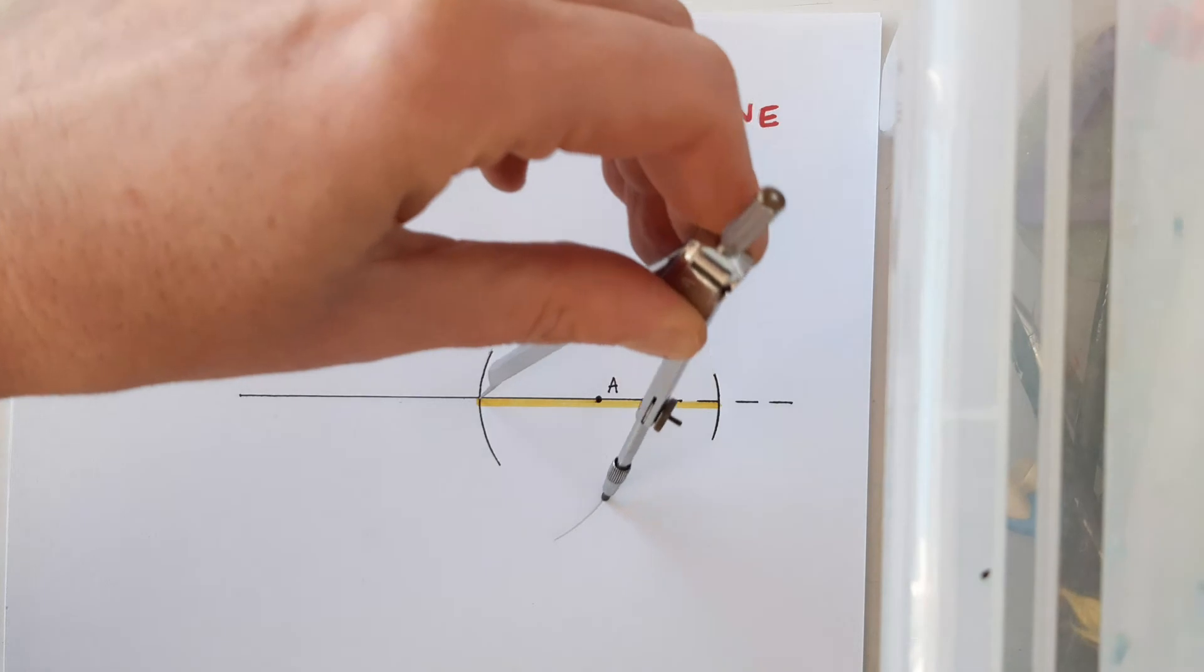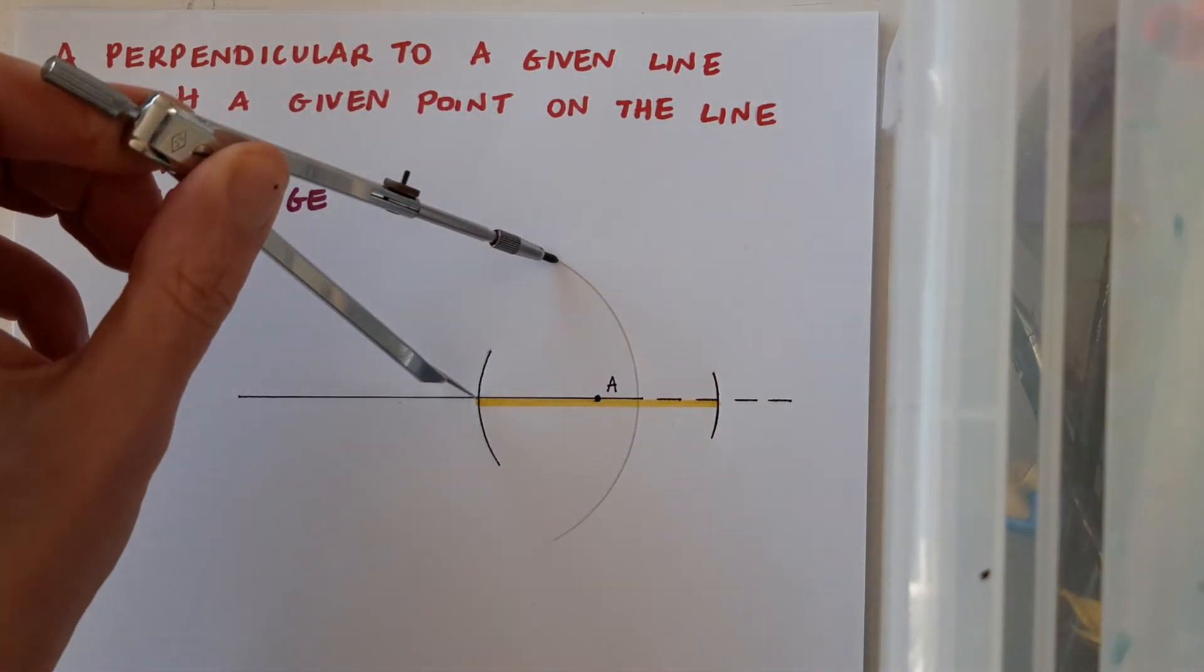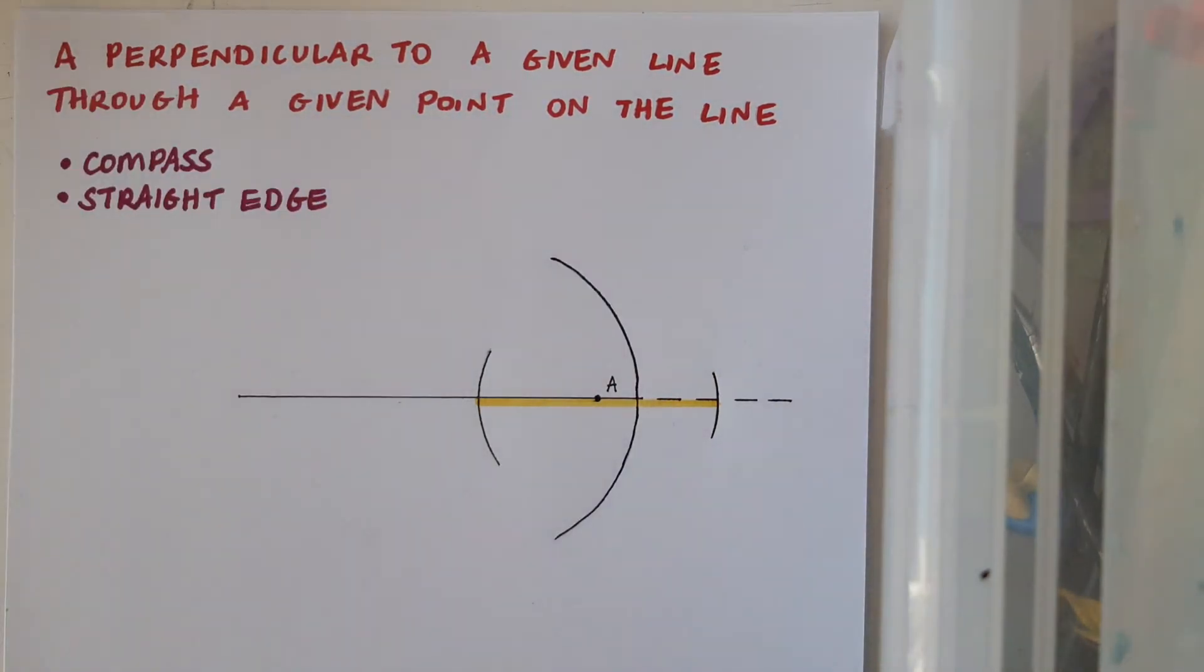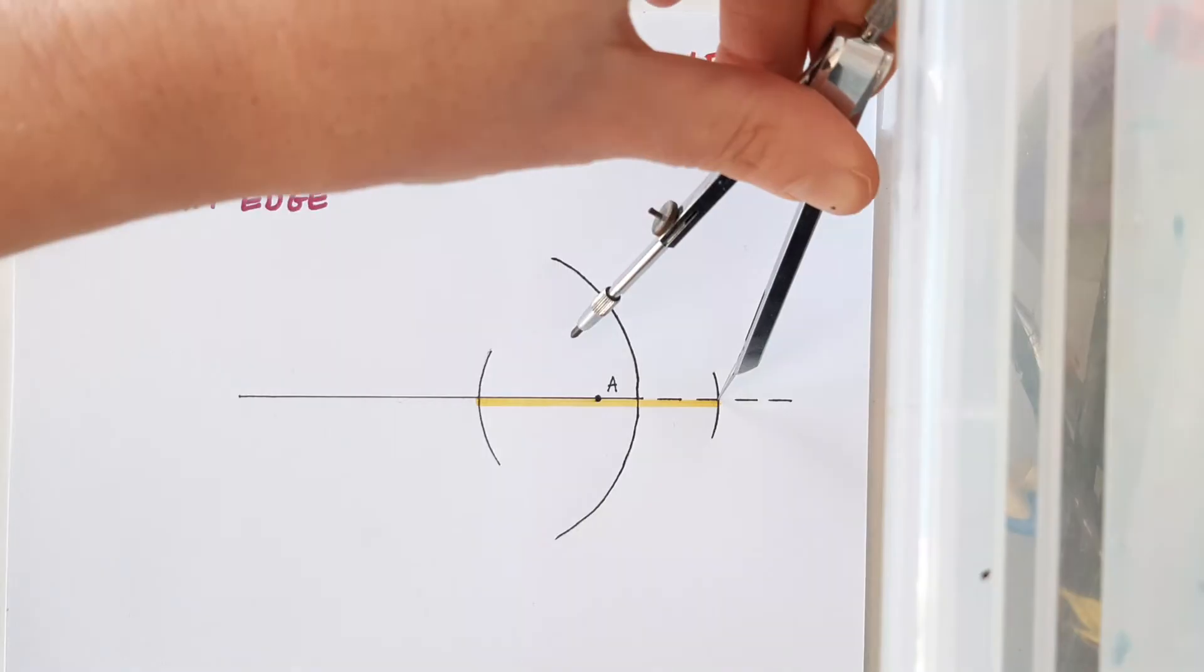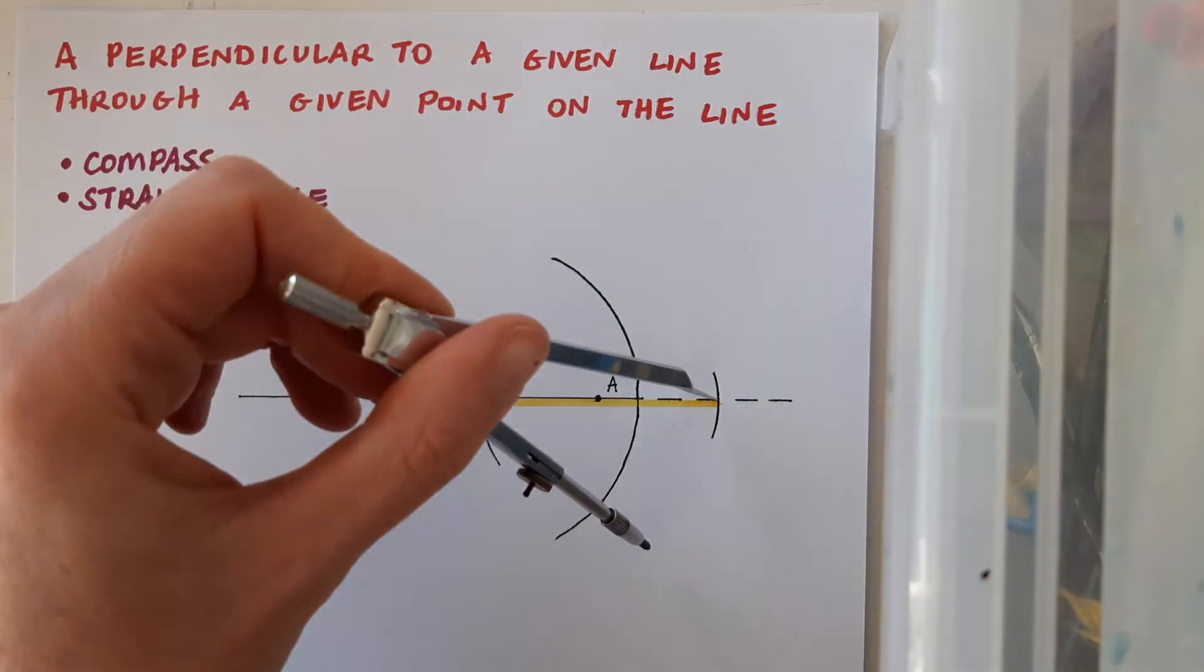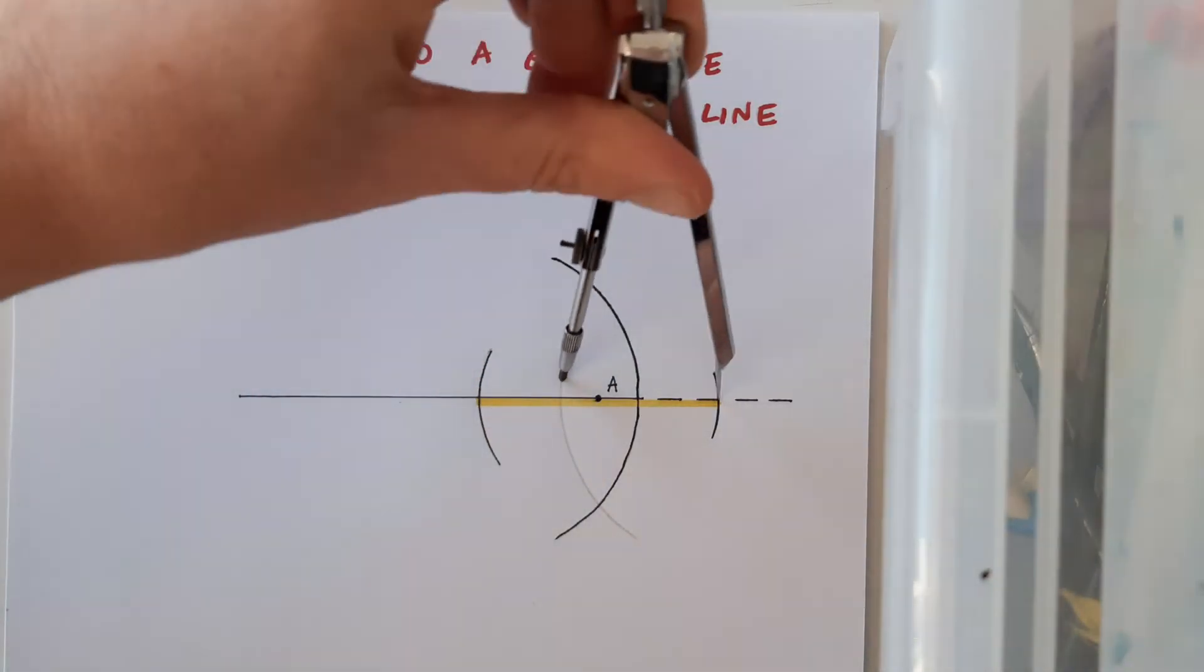Now I'll draw my arc above and below, and then I'll go to the other end of that line segment and do the same. The point of my compass is at the end there and I draw my arc above and below.